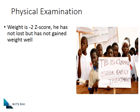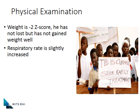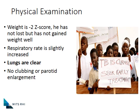When we examine Lerato, we plot his growth and discover a Z-score of minus two, which is concerning. He's been on ARVs for two years, so we would expect him to be gaining good weight, but he's not gaining any weight at all. He has a slight increase in respiratory rate, but his lungs sound pretty clear. There's no clubbing and no parotid enlargement. Actually, he looks quite well — playful and interactive in the consulting room.